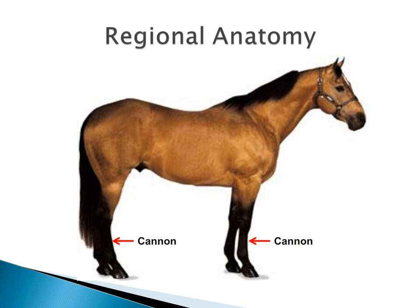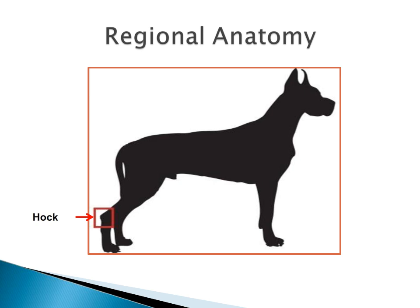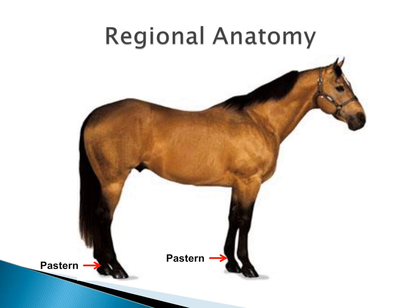In horses, the long metacarpal and metatarsal bones are collectively called the cannon bones. Just distal to the knee and stifle joints is the fetlock joint — the metacarpal-phalangeal junction in the front legs and the metatarsal-phalangeal junction in the back legs. In cats and dogs, we refer to those joints as the hock in the back and the carpus in the front. In the horse, the region below the fetlock joints is called the pastern, which consists of the short and long pastern bones, part of the horse's digits.